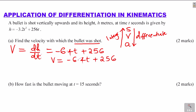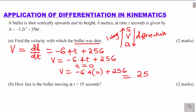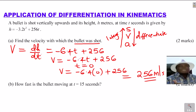We've got the expression for velocity, but we haven't answered the question yet. We need to find the velocity with which the bullet was shot. The bullet was shot at the initial time t equals 0 seconds. Substituting t equals 0 into velocity equals negative 6.4t plus 256 gives velocity equals 256 meters per second.